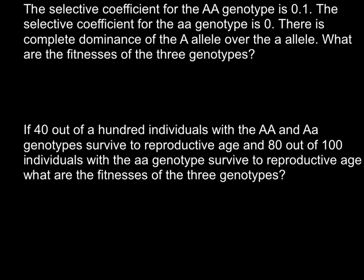The selective coefficient for the homozygous dominant genotype is 0.1. The selective coefficient for the homozygous recessive genotype is 0. There is complete dominance of the capital A allele over the small a allele. What are the fitness values of the three genotypes?